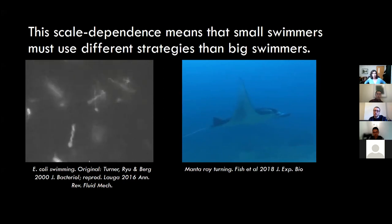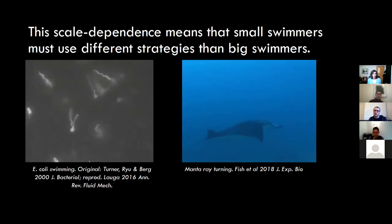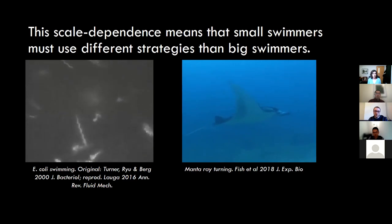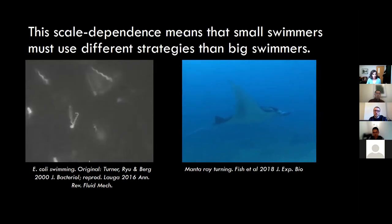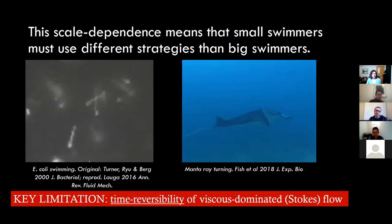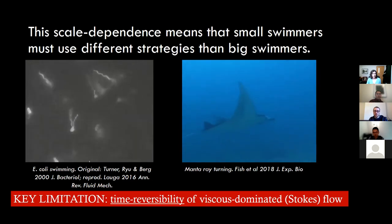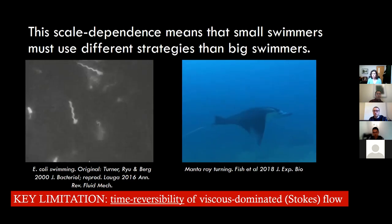We see many different swimming strategies between very small and very large scales — from lift-based propulsion like a manta ray to friction/viscosity-dominated modes of propulsion at very small scales. One key limitation at very low Reynolds numbers is that the flow is time-reversible, and that makes a huge difference to the strategies you might want to use to move around.